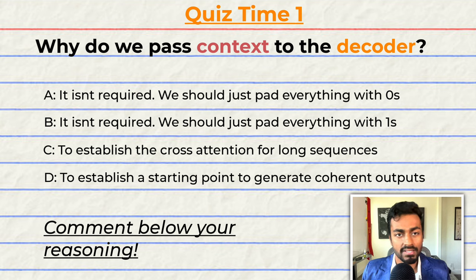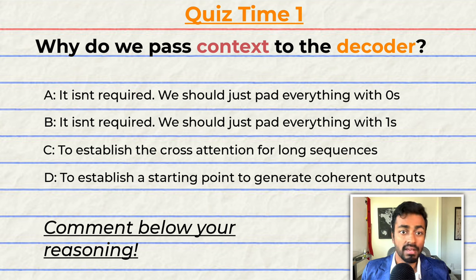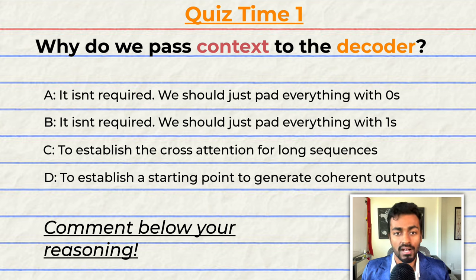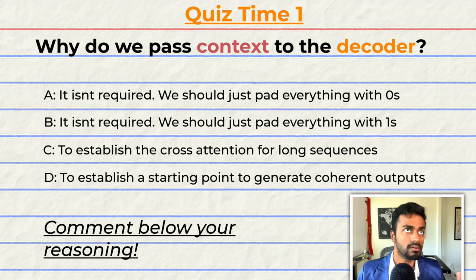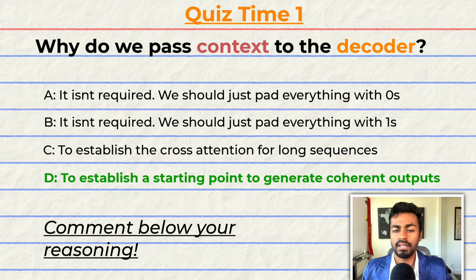Quiz time! Have you been paying attention? Let's find out. Why do we pass the context to the decoder? A: it isn't really required and we should just pad everything with zeros. C: to establish the cross attention for long sequences. Or D: to establish a starting point for generating coherent outputs. The correct answer is D. But can you tell me why? Comment your reasoning down below and let's have a discussion.